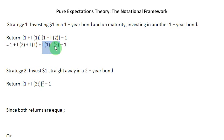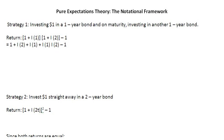Now, this item I1 times I2 is going to be pretty small to be of any consequence, so I am going to ignore that. And that will leave me with only an I1 and I2. So what I write here is I1 plus I2. So what I realize is that if I follow strategy number 1, my return is simply equal to the sum of the two short-term interest rates, that is I1 and I2.